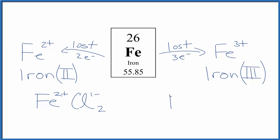Over here, we have our iron. It loses three electrons, becomes Fe three plus, the iron three ion.